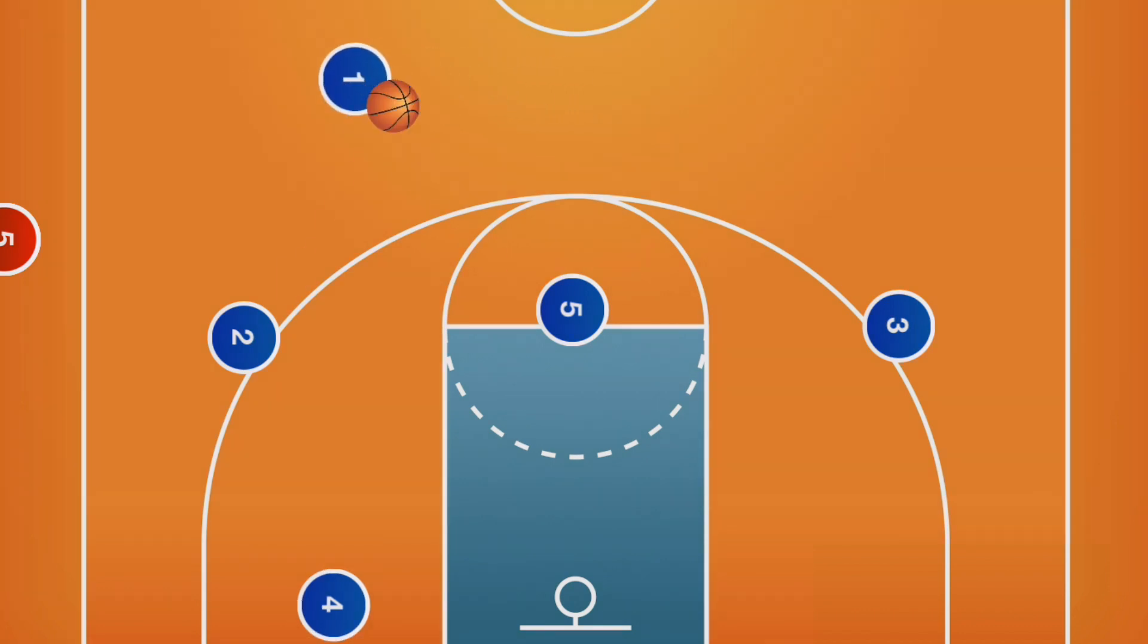The point guard will look to attack one side of the floor and make an entry pass to either the wing or the high post. If the ball goes to the wing, the next look will be the high post or short corner.